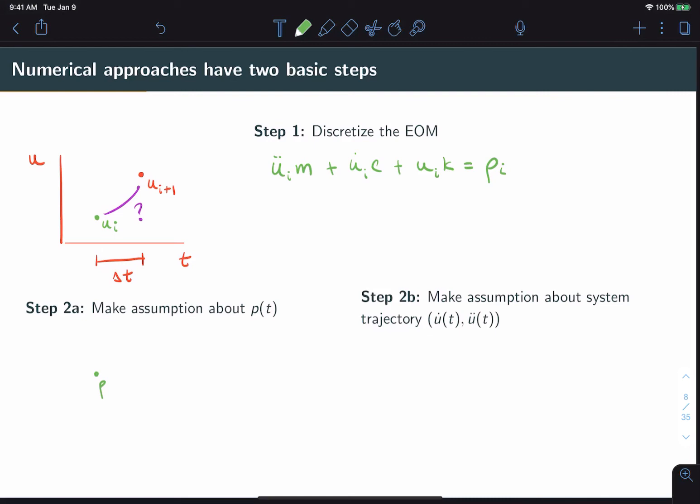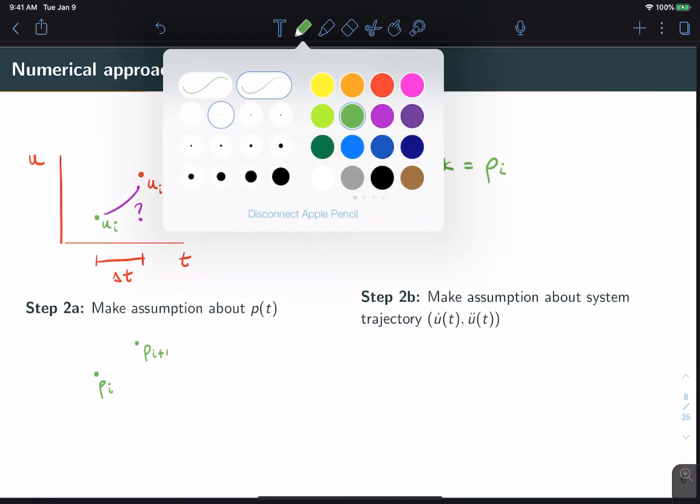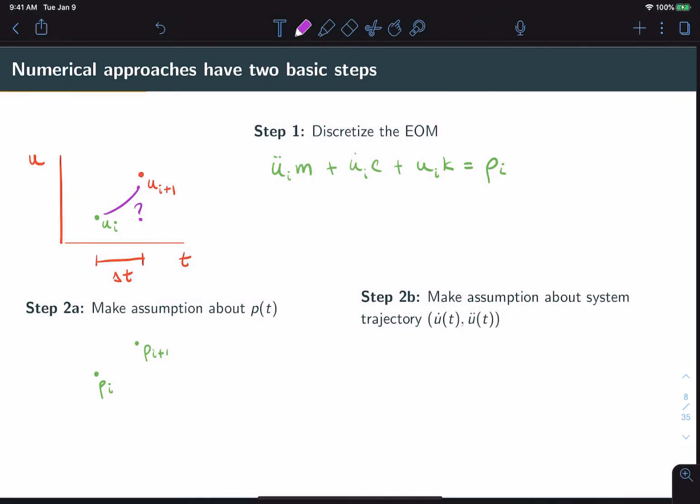Let's look at the first case where we can make an assumption as in step 2a, make an assumption about the force in that time interval. If we have, let's say, a known force pi and a known force pi plus one, keep in mind that we know the force history ahead of time, so pi plus one is always known, we can make some assumption about what the force is doing in between, and we can say that, for example, this force can be linear.